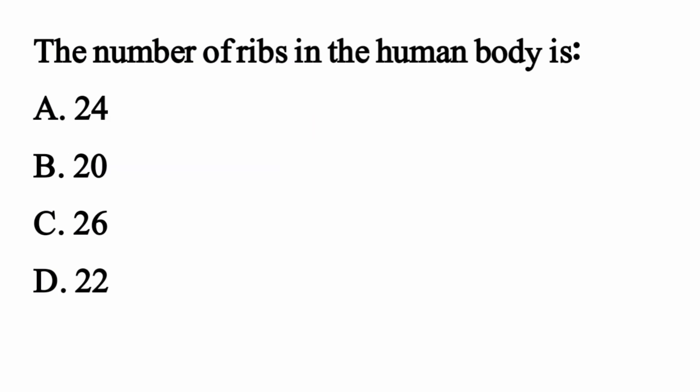The number of ribs in the human body is — the right option is Option A: 24.